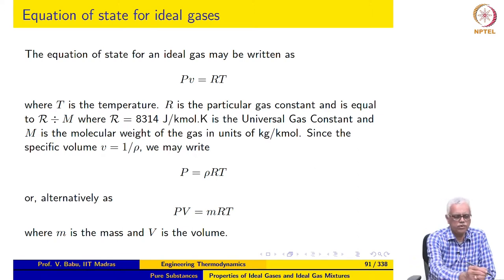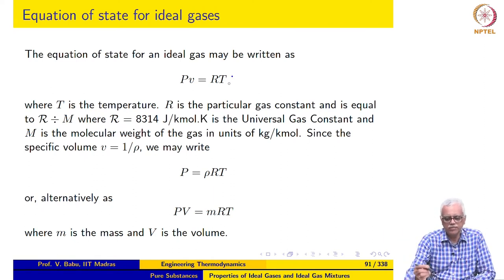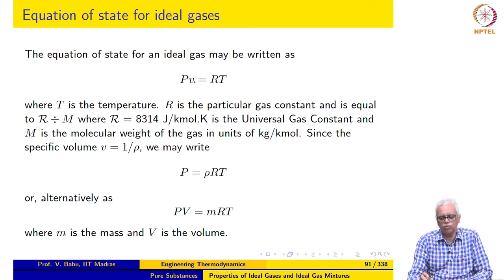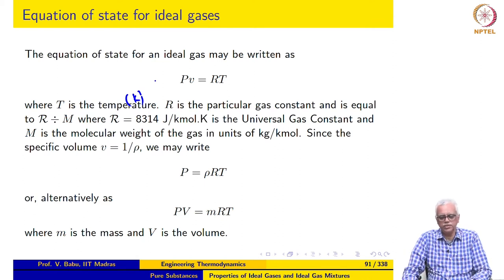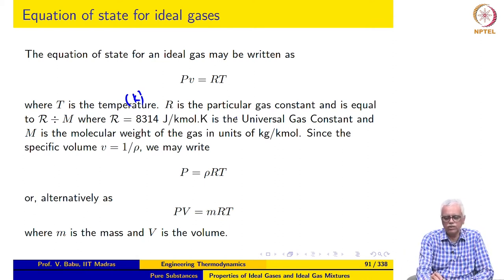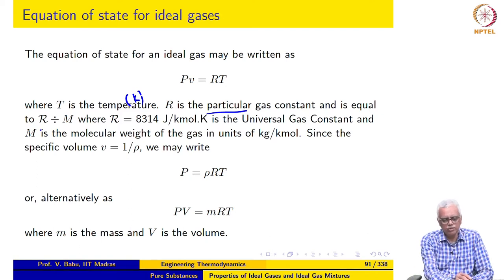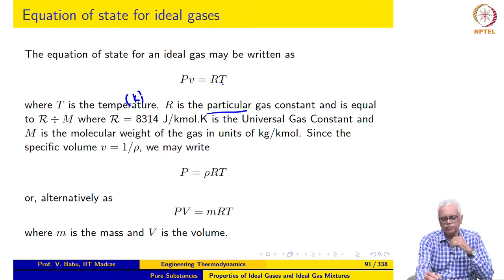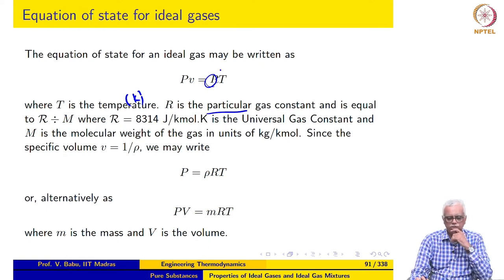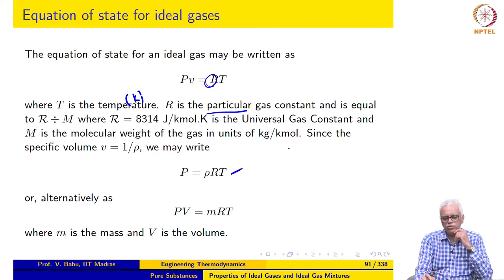As many of you know from school physics, the equation of state for an ideal gas may be written as PV = RT, where V is the specific volume and T is the temperature in Kelvin. R here is called the particular gas constant — not the universal gas constant. It equals the universal gas constant divided by the molecular weight of the gas. In engineering thermodynamics, this form is quite common. Since specific volume is the reciprocal of mass density, we may also write P = ρRT.